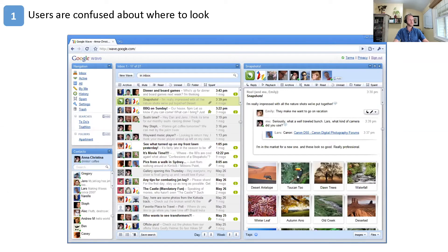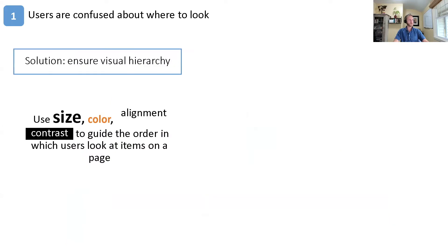Some of you may have seen Google Wave — it doesn't exist anymore, and I'm showing it because it's a good example of what not to do. When you first encounter it you're not sure what the most important part of the interface is or where you're supposed to look. The solution is to ensure what we call a visual hierarchy — the way you design elements on the page to guide users' attention in a specific order. You can use things like size, color, alignment, and contrast to draw people's attention and control the order in which they see things.